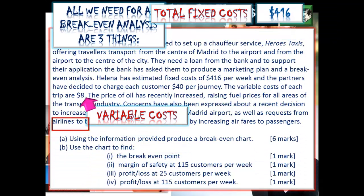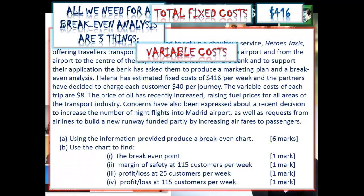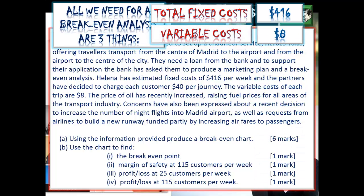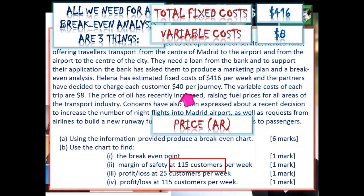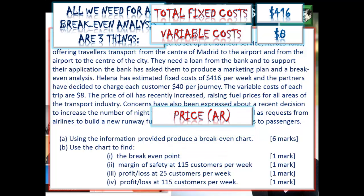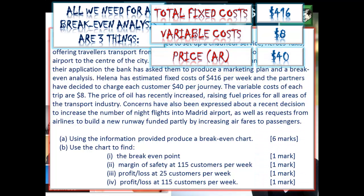The variable costs — the variable costs here for the taxi trip: $8. And then we just need to know the price or the average revenue. Here we are: decided to charge each customer $40 per journey. Price $40. We've got our three pieces of information; now we can go away and run our calculation.